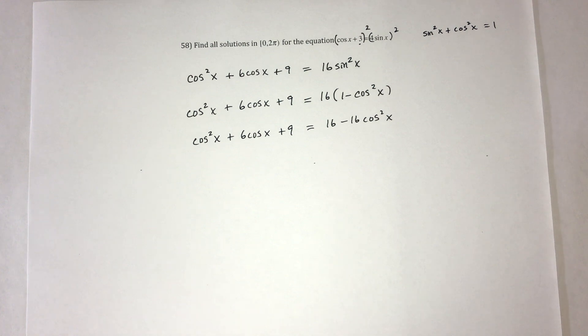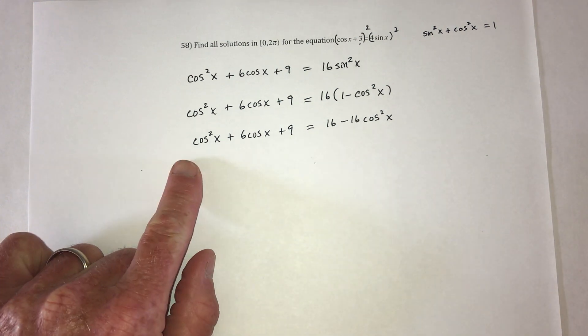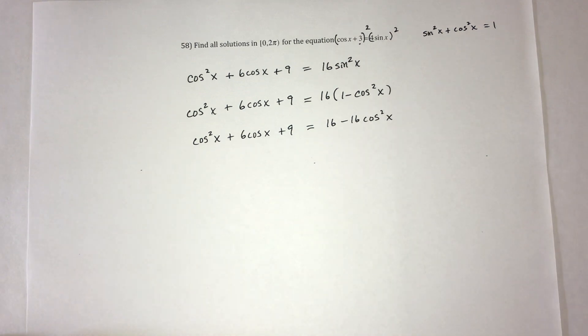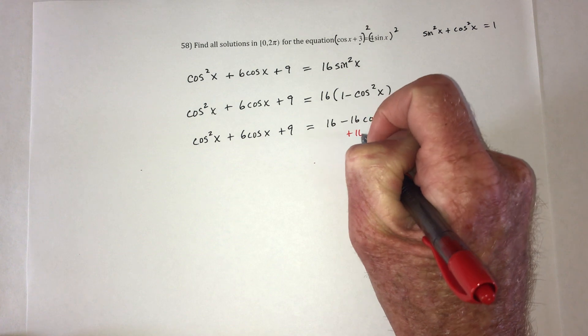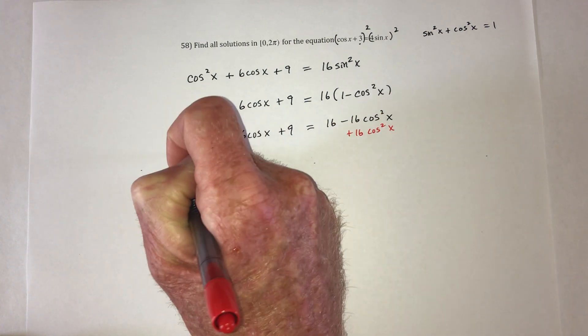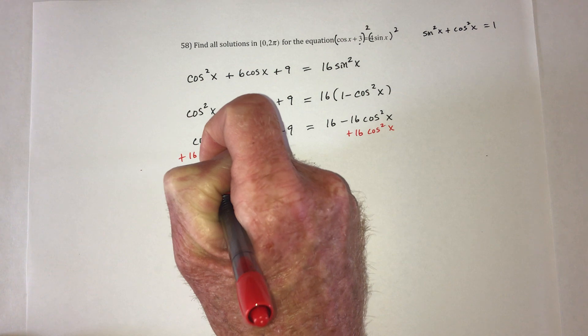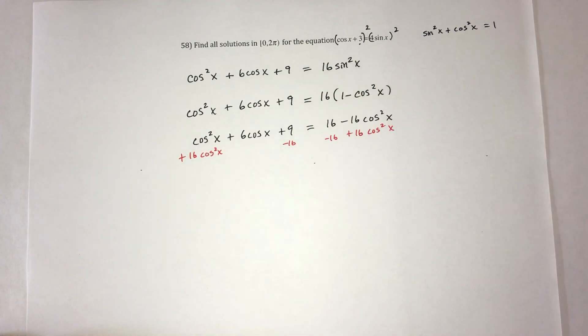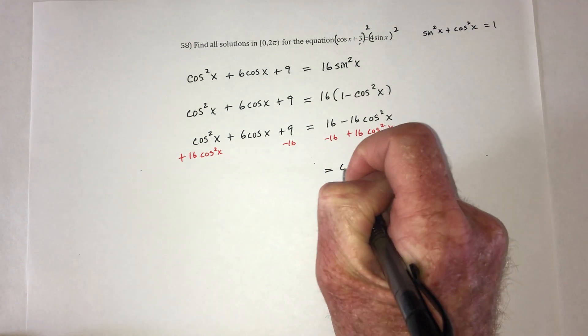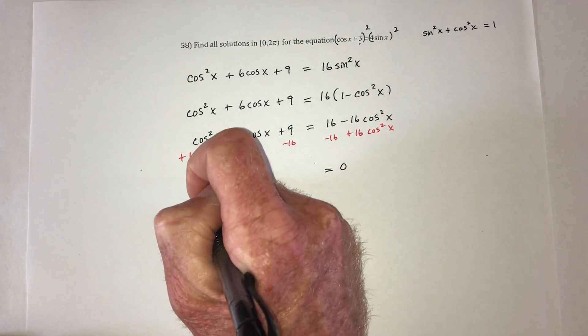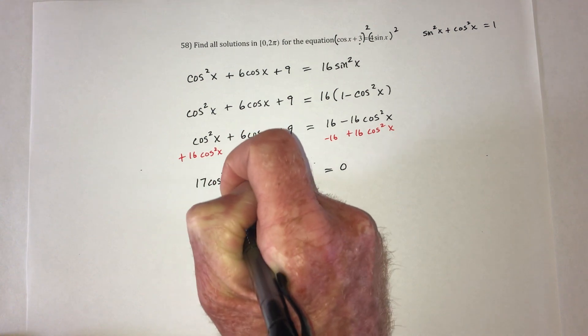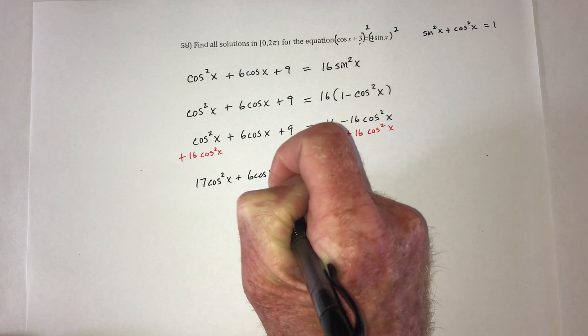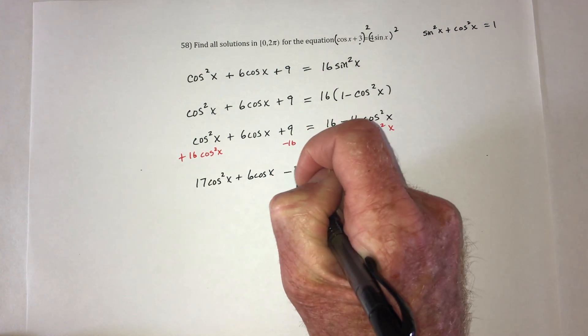And then we need to move everything to one side. So I'm going to put everything on the left side. So that means I need to add 16, add 16 cosine squared. So the right side will just have 0. The left side has 17 cosine squared plus 6 cosine. And then this would be minus 7.